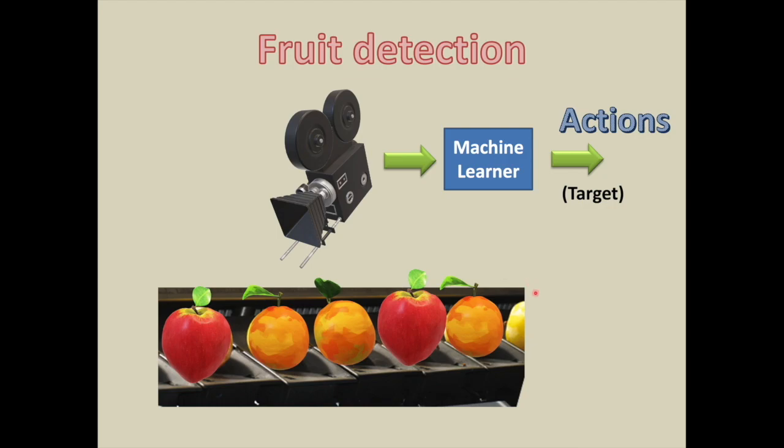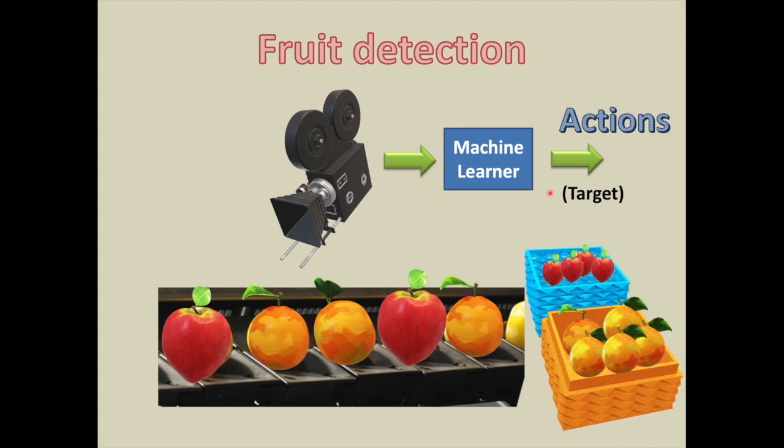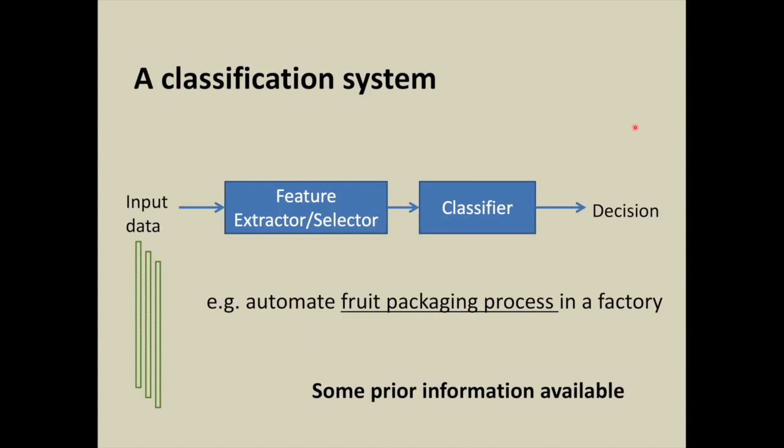In a fruit detection system, fruits are coming in a line and a sensor or a camera is watching incoming objects. The camera captures the image and sends it to the machine learner, which tells whether the fruit is apple or orange. This target information is then given to robots to act accordingly, for example, place apples in the apple box and place oranges in the orange box.